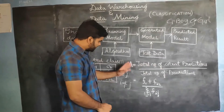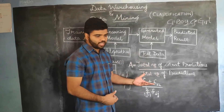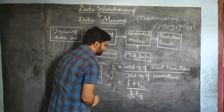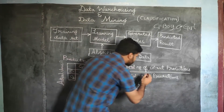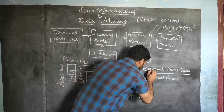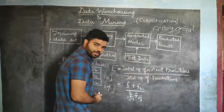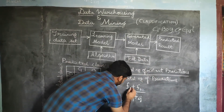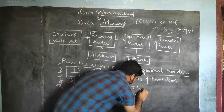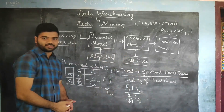Similarly, to measure the error: error E equals total number of incorrect predictions divided by total number of predictions, that is (F12 + F21) divided by sigma Fij.